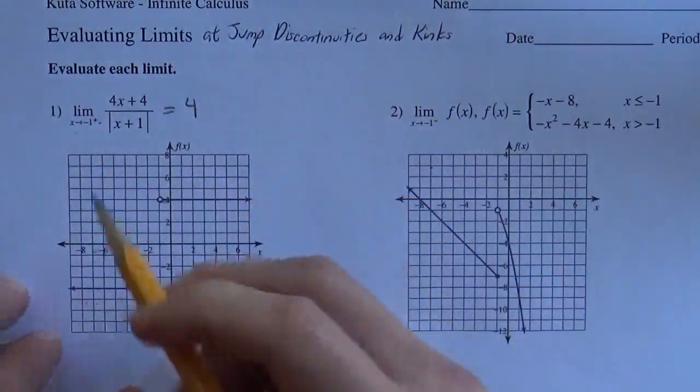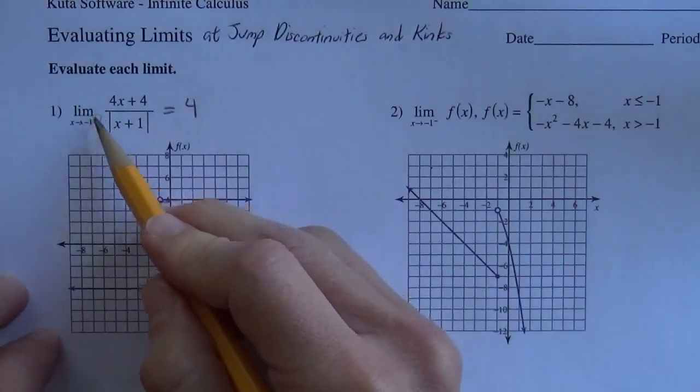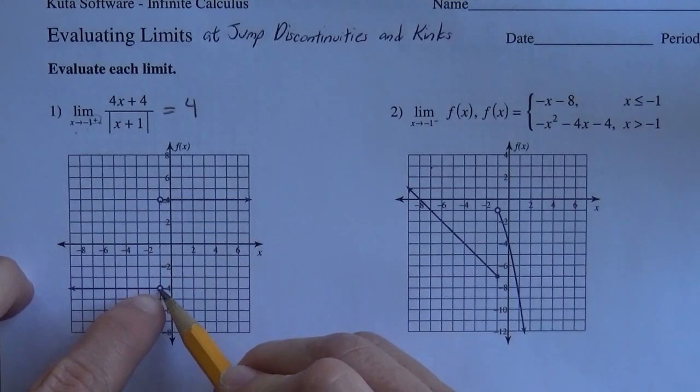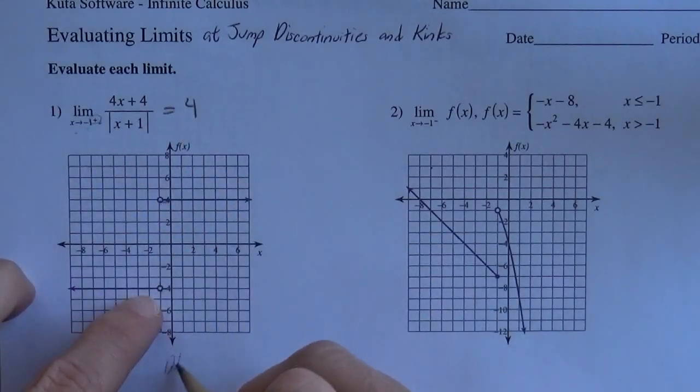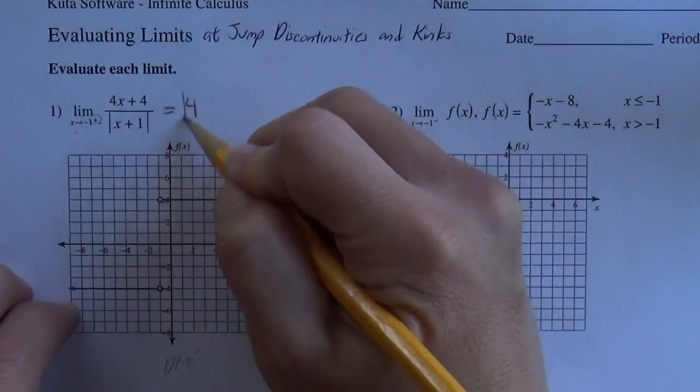Had it said, if that had been a negative, it would be coming from the left, and so it would be this negative 4. And if it didn't say anything, no right or no left, you would write does not exist. But this one here, just a 4.